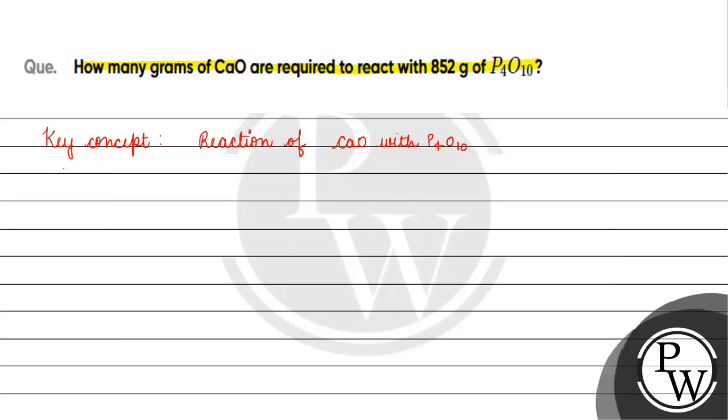Calcium oxide is a basic nature oxide and P4O10 is an acidic nature oxide. What will be the reaction of these two? Salt which is calcium phosphate salt.